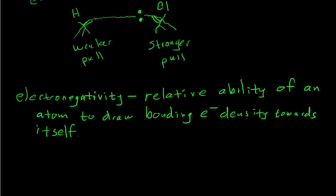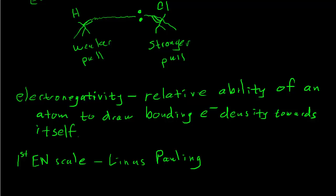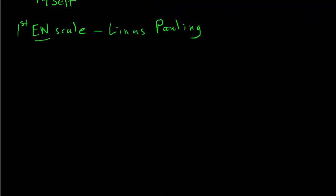The first electronegativity scale was invented by Linus Pauling — these are called the Pauling electronegativities (I'll abbreviate electronegativity as EN). Pauling assigned fluorine a value of 4.0, rather arbitrarily, as the most electronegative atom. Based on bond energy data, fluorine seemed to have the highest ability to pull electrons towards itself, and he then used experimental data to come up with relative numbers for all the other elements.